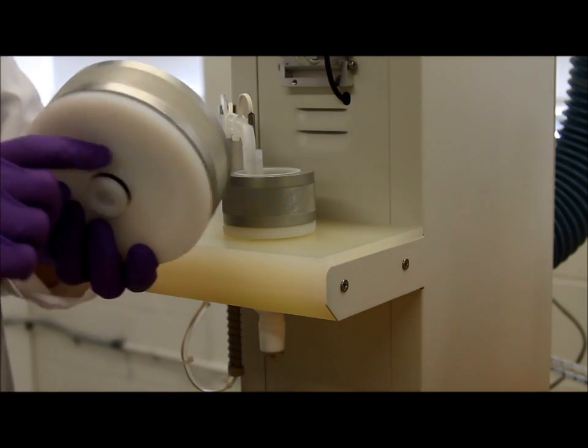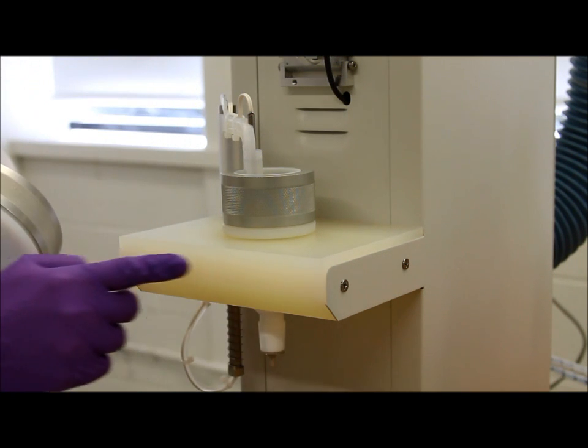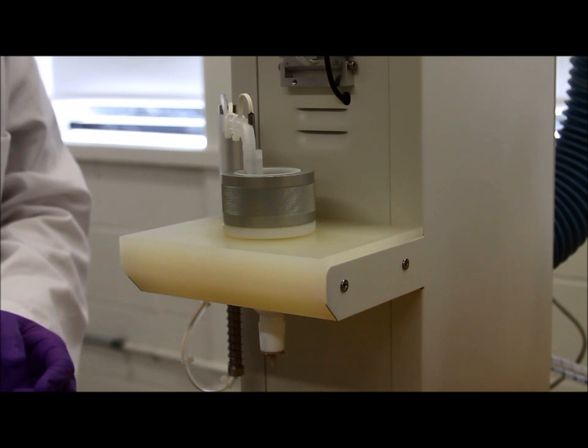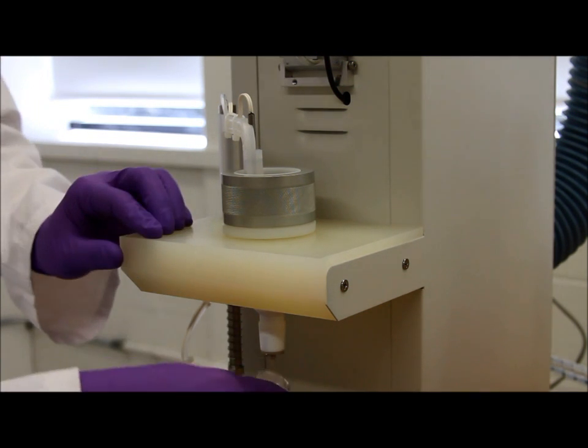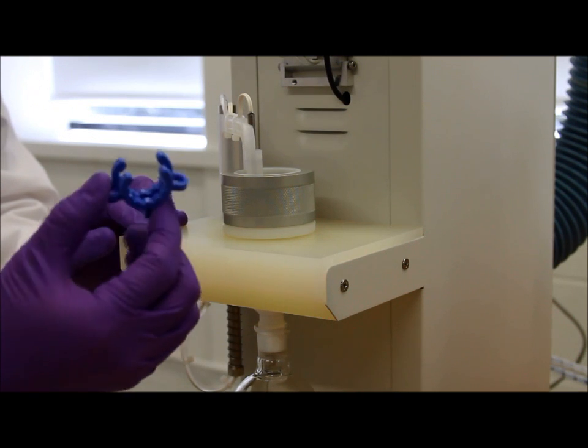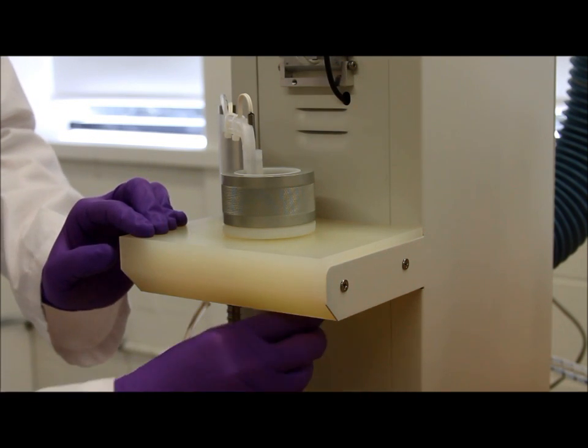Each disc holder has a gasket that forms a seal with your disc holding platform. Then grab your collection vessel and place it underneath and twist tightly. Then grab your blue clip and secure your collection vessel.